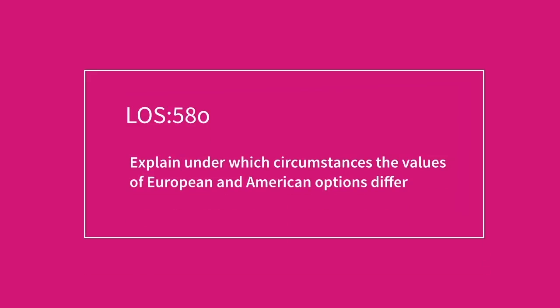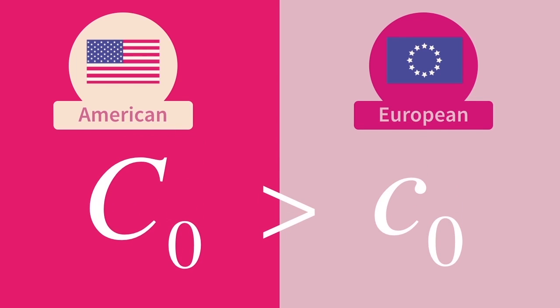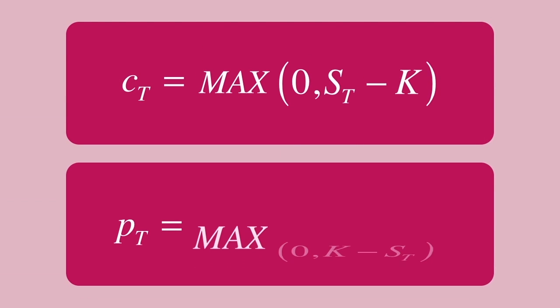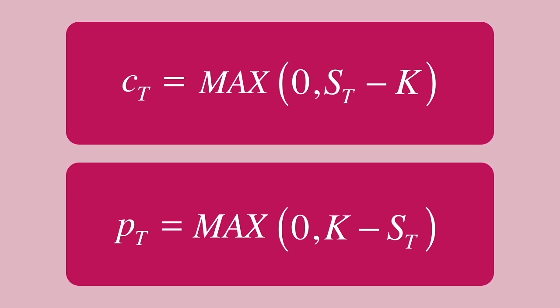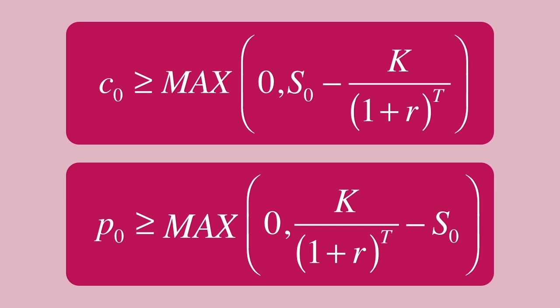The major difference between American and European options is the freedom an American option holder has to exercise early. There is no requirement forcing early exercise, so American options cannot be worth less than European options. The expiration value of an option, European or American, is given by either of two expressions depending on whether you hold a call or a put. For European options, we discount variables back to time zero to get an expression for the initial value, representing the minimum anyone would be expected to pay.